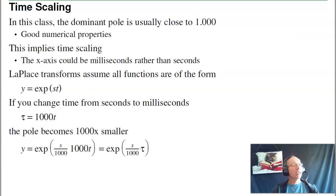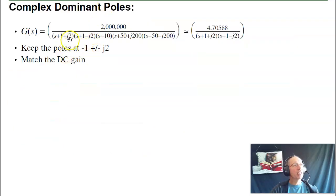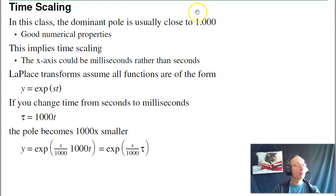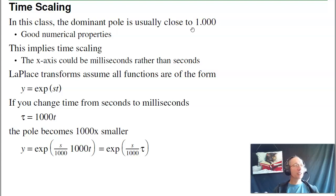Kind of a sidelight: in this class, most of the systems we're looking at have a dominant pole right around minus 1. The reason for that is it makes the math a lot easier — one has nice numerical properties: one squared is 1, one cubed is 1, and so on. What that implies is time scaling. If my pole is not at minus 1, say the pole is at minus 1000, if I time scale so that my x-axis is in milliseconds instead of seconds, now the dominant pole is at minus 1. If it's economics where it takes months for the economy to settle out, my time unit might be months or years. Typically, the dominant pole is right around 1, whatever your time unit is, at least in this class.